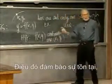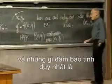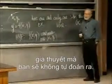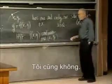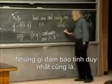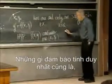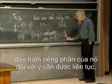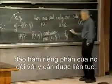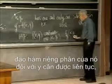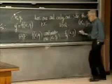That guarantees existence. And what guarantees uniqueness is the hypothesis that you would not guess by yourself. Neither would I. What guarantees the uniqueness is that also its partial derivative with respect to y should be continuous.